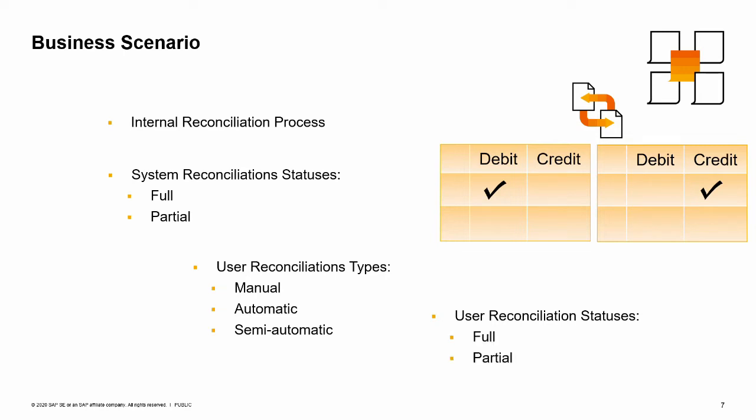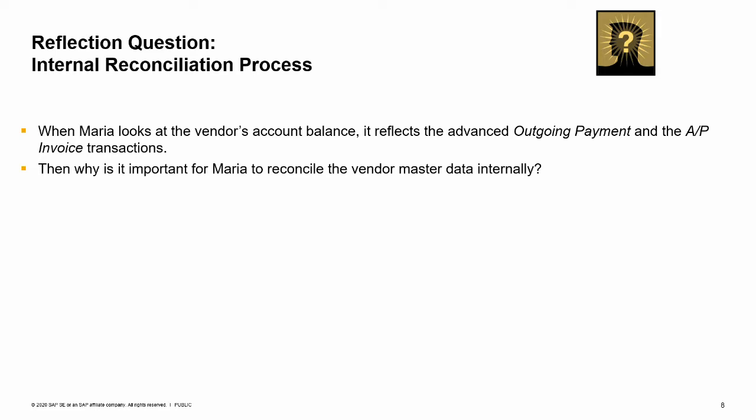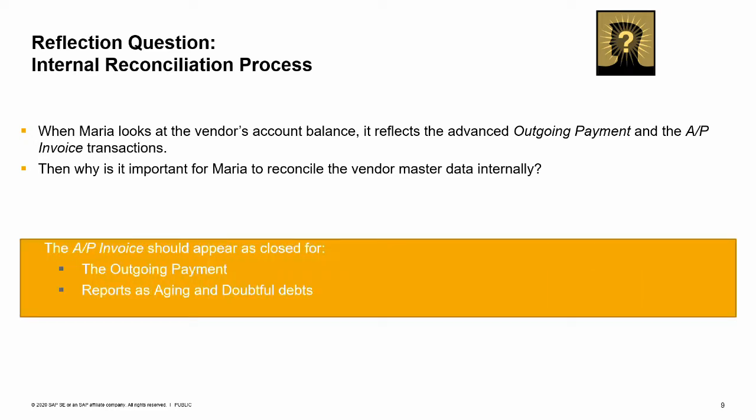Just like with system reconciliations, user reconciliations can be full or partial. Consider the case where OEC Computers pays a vendor in advance and receives the AP invoice later on. When Maria looks at the vendor's account balance, it reflects the advanced outgoing payment and the AP invoice transactions. If reconciliation is not done, the AP invoice will appear as open when creating a new outgoing payment for the vendor. Another reason is the effect on reports such as aging and doubtful debts — the AP invoice will appear as open in those reports if Maria does not reconcile it with the outgoing payment transaction.